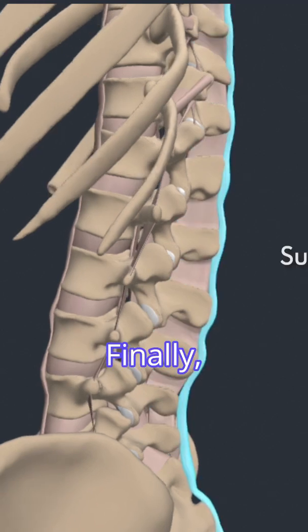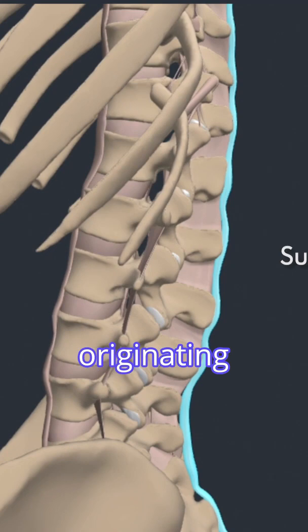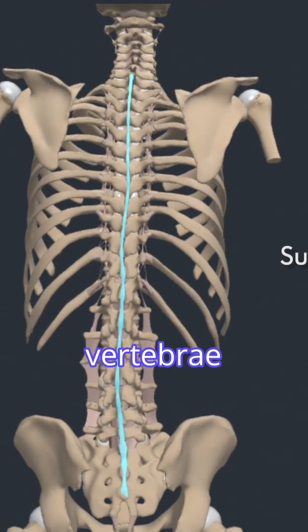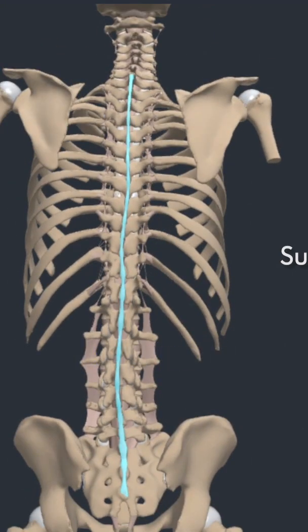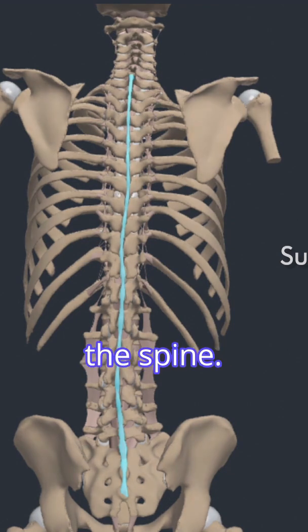Finally, the supraspinous ligament is a continuous ligament originating from the C7 vertebra down to the sacrum. It connects the tips of the spinous processes and limits flexion of the spine.